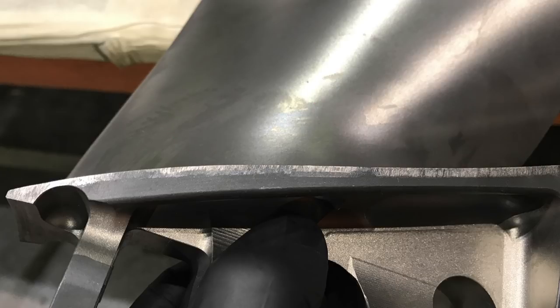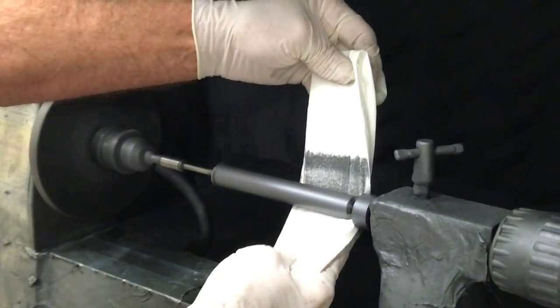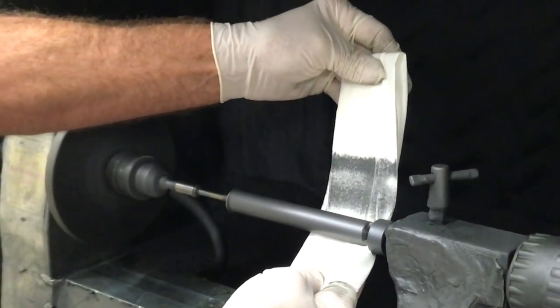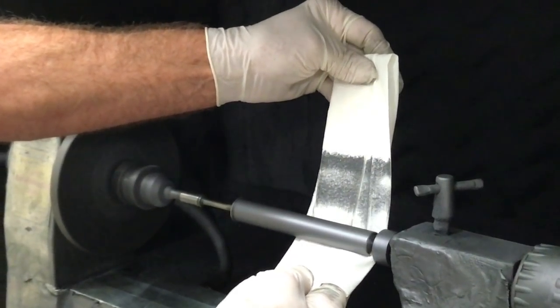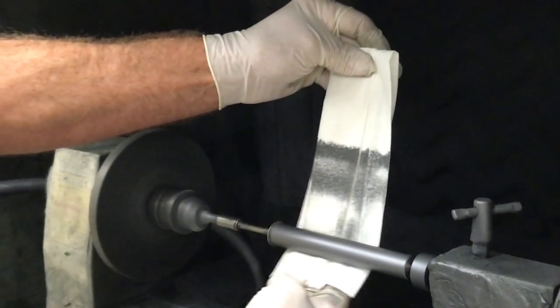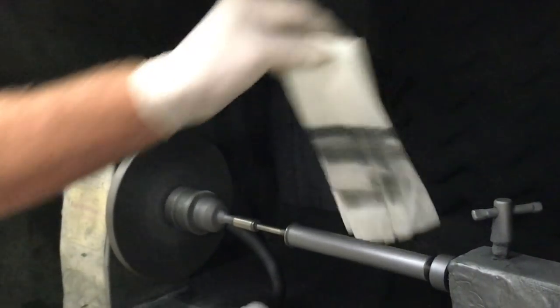In this video, we show one method of buffing the fan blade pins using a shop lathe. Note the color change on the buffing towel which shows the top coat being buffed into the base coat. This method typically performed in a back shop after the fan blade pins have been re-coated. An alternative method for buffing the fan blade pins is also available in the manual using a drill and shop towel or cloth.